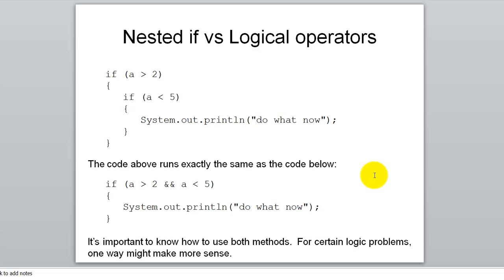And lastly, this shows how similar nested if statements can be to logical operators. This is what we just learned today. We have an if statement nested inside of this if statement. So if a is greater than 2, we look in here. If a is less than 5, we look in here, and we print do what now? But this is exactly the same code. If a is greater than 2 and a is less than 5, then print do what now? So the only way we could get to this print line statement is if this was true and this was true. So we could write it with just the logical operator AND.